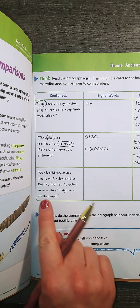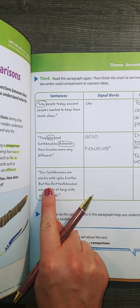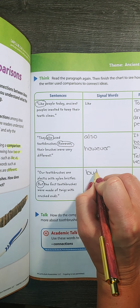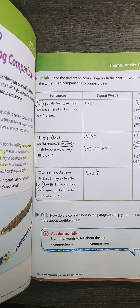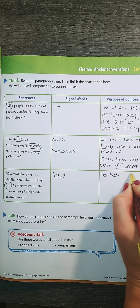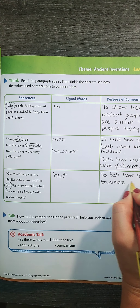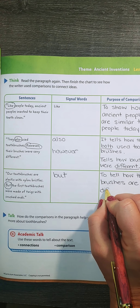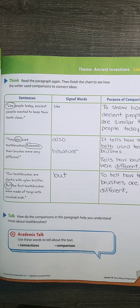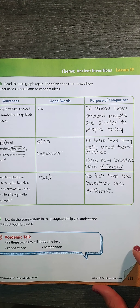Our last sentences from the text say: 'Our toothbrushes are plastic with nylon bristles, but the first toothbrushes were made of twigs and crushed ends.' I see that signal word but, which is telling me a contrast — how they were different. The purpose is to show how the brushes are different: ours is plastic and nylon, theirs were twigs and crushed ends. Not sure about you, but I don't really want to use twigs and crushed ends to brush my teeth!